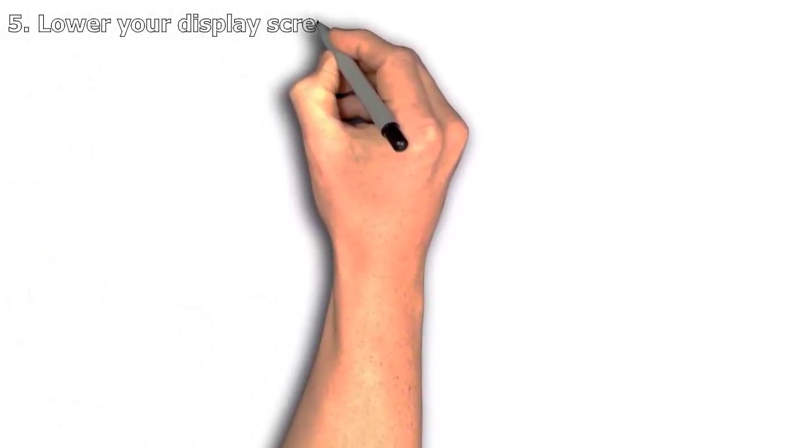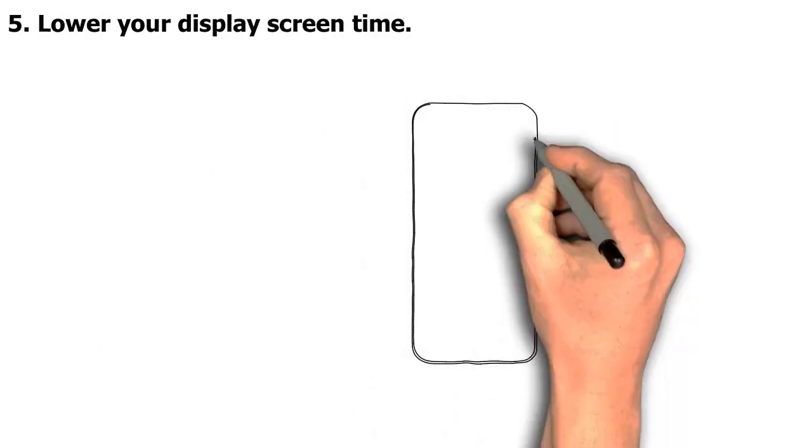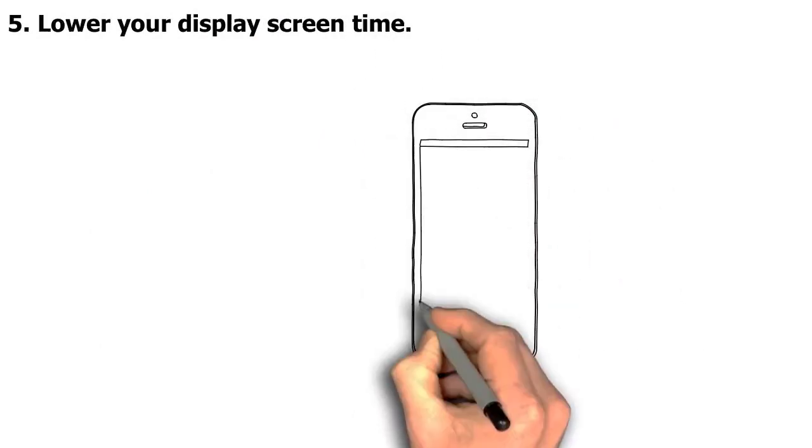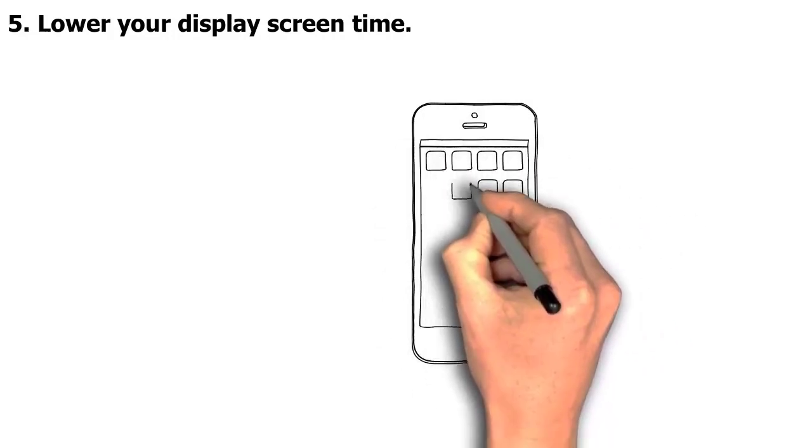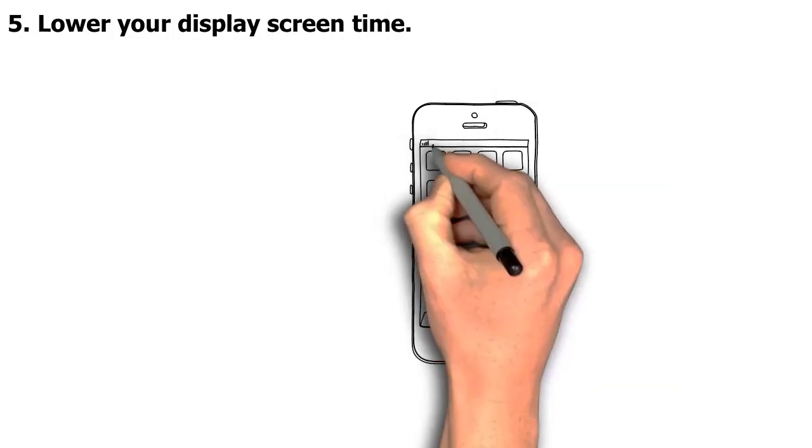5. Lower Your Display Screen Time. If you want to become smarter each day, start by keeping track of your screen time. Studies have shown that excessive phone use is harmful to cognitive performance.